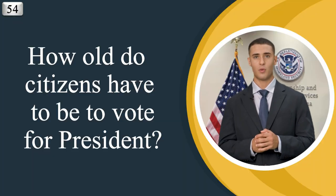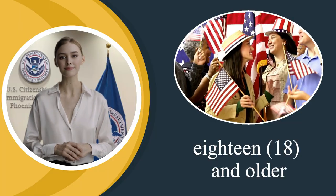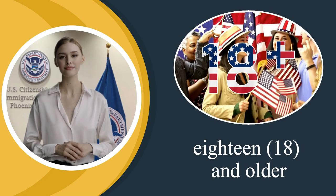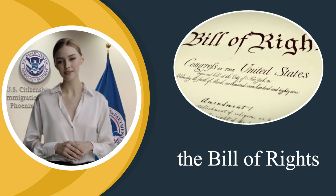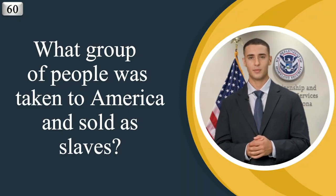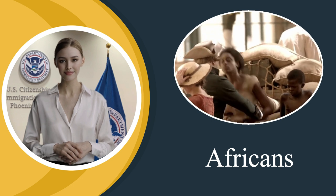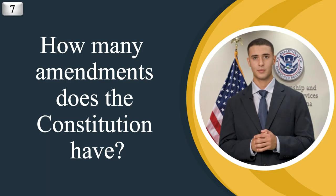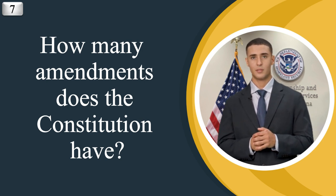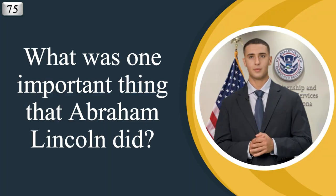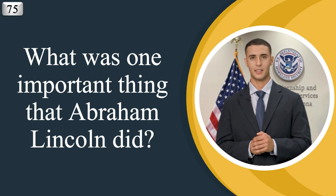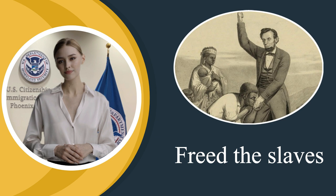How old do citizens have to be to vote for president? 18 and older. What do we call the first 10 amendments to the Constitution? The Bill of Rights. What group of people was taken to America and sold as slaves? Africans. How many amendments does the Constitution have? 27. What was one important thing that Abraham Lincoln did? Free the slaves.